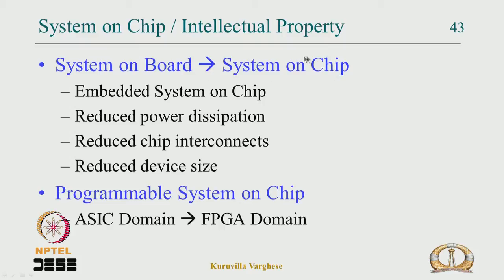Putting the complete system on a chip reduces power dissipation, area, cost, and delay. The same trend is happening in the FPGA domain: in ASIC you have system on board, and in FPGA you have programmable system on chip — where processors, peripherals, and custom logic are all on the FPGA. Some manufacturers call it system on programmable chip.